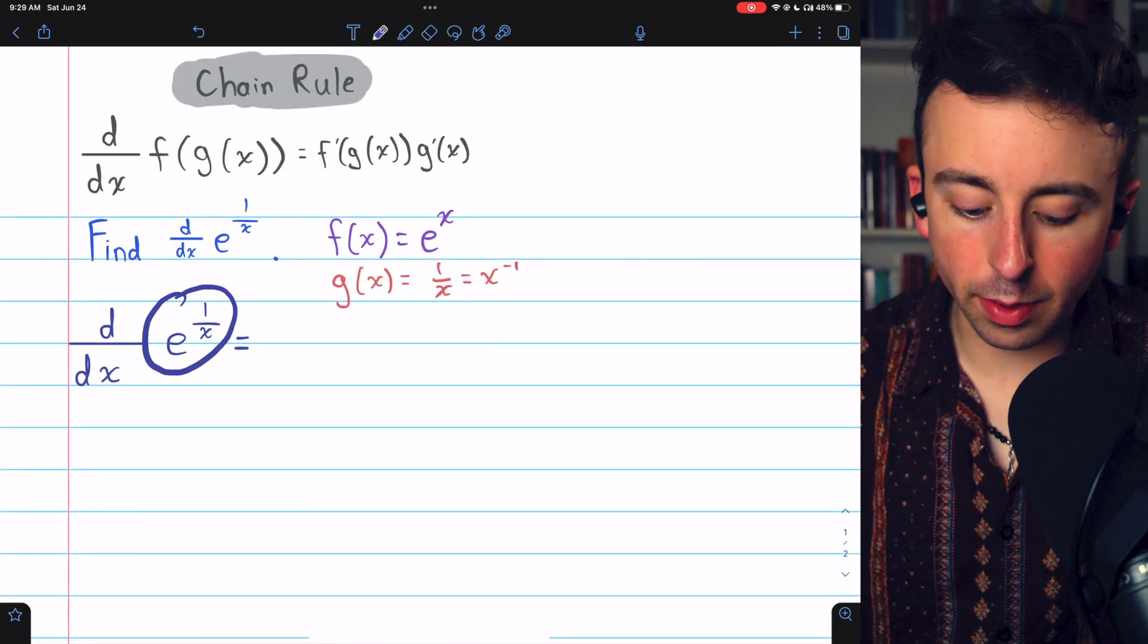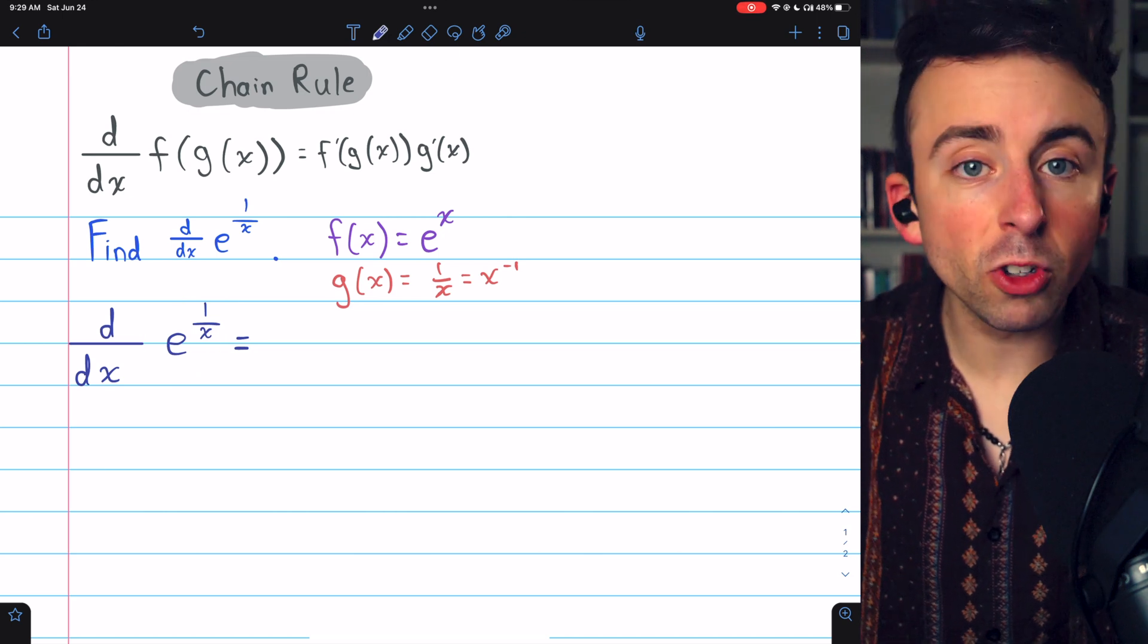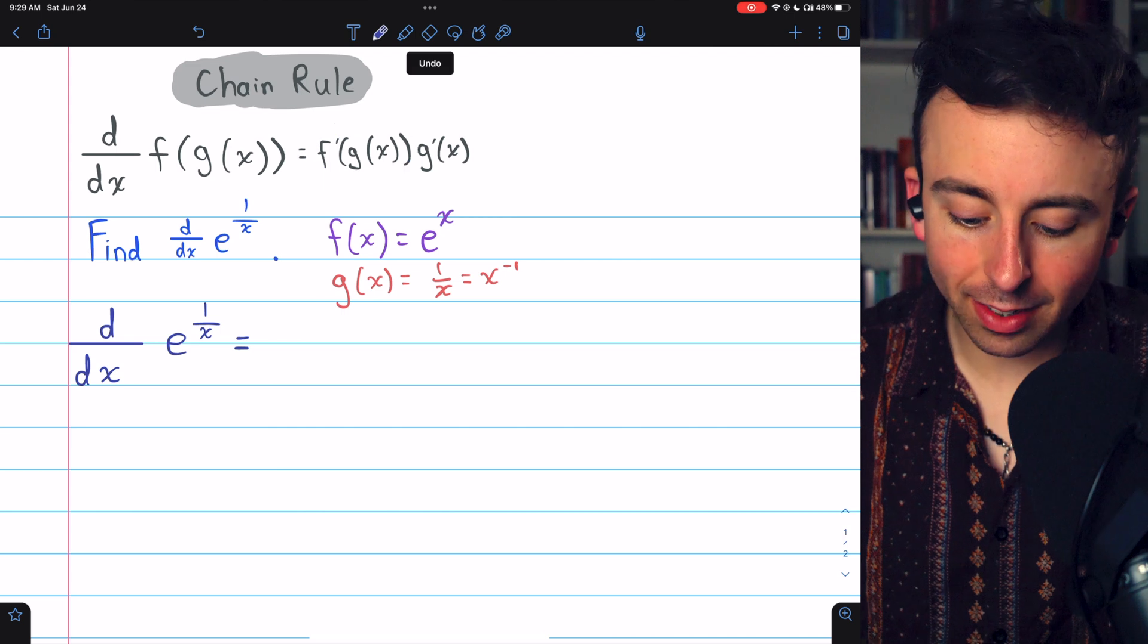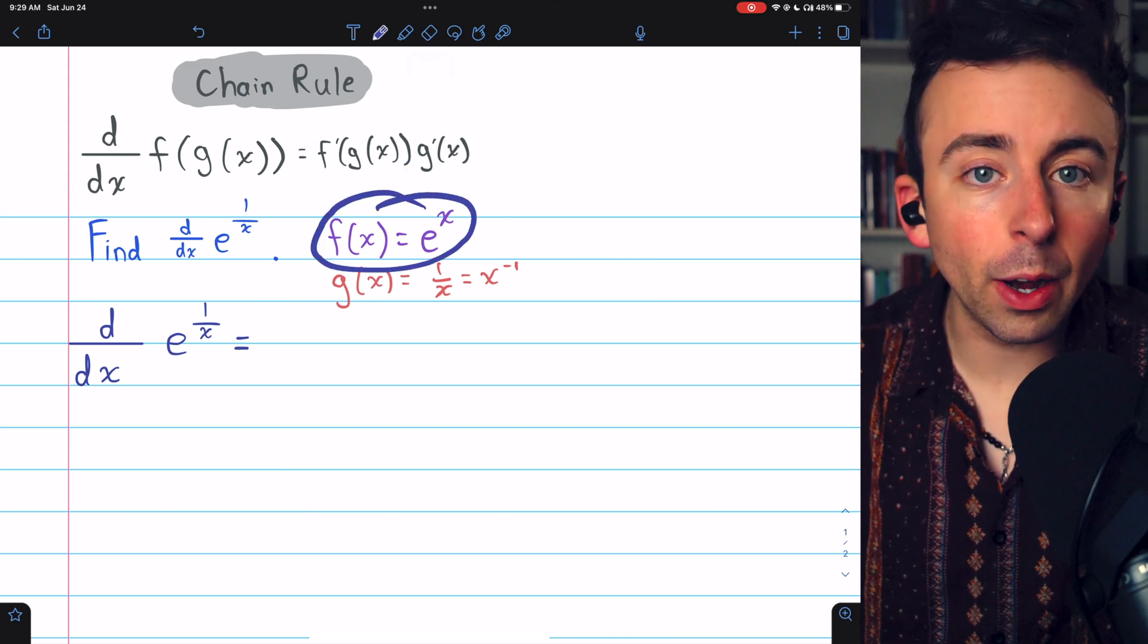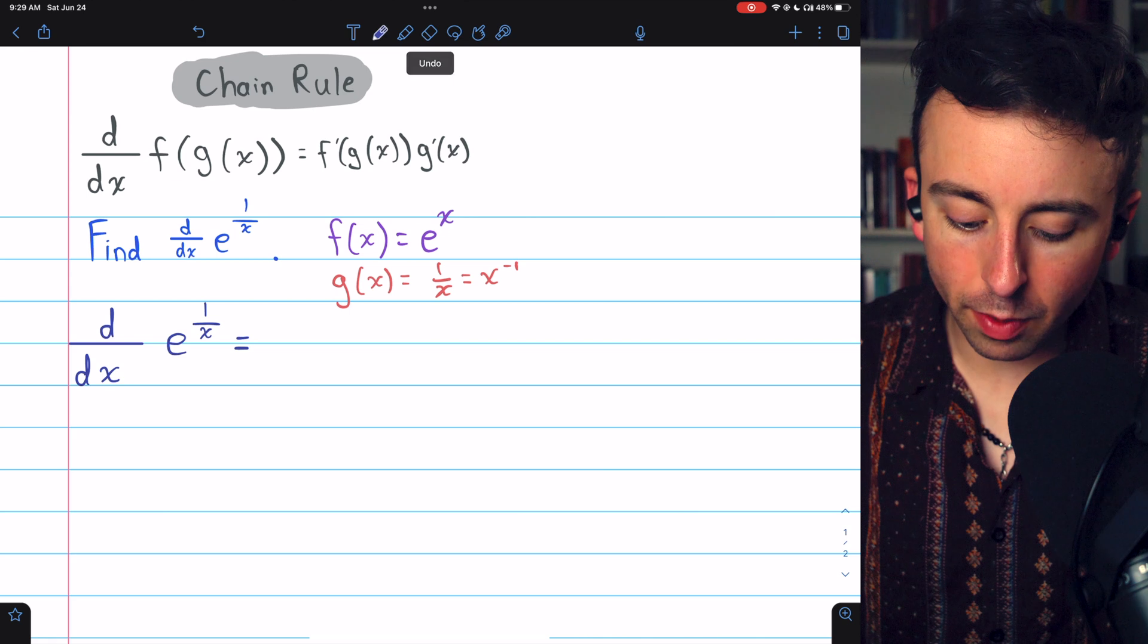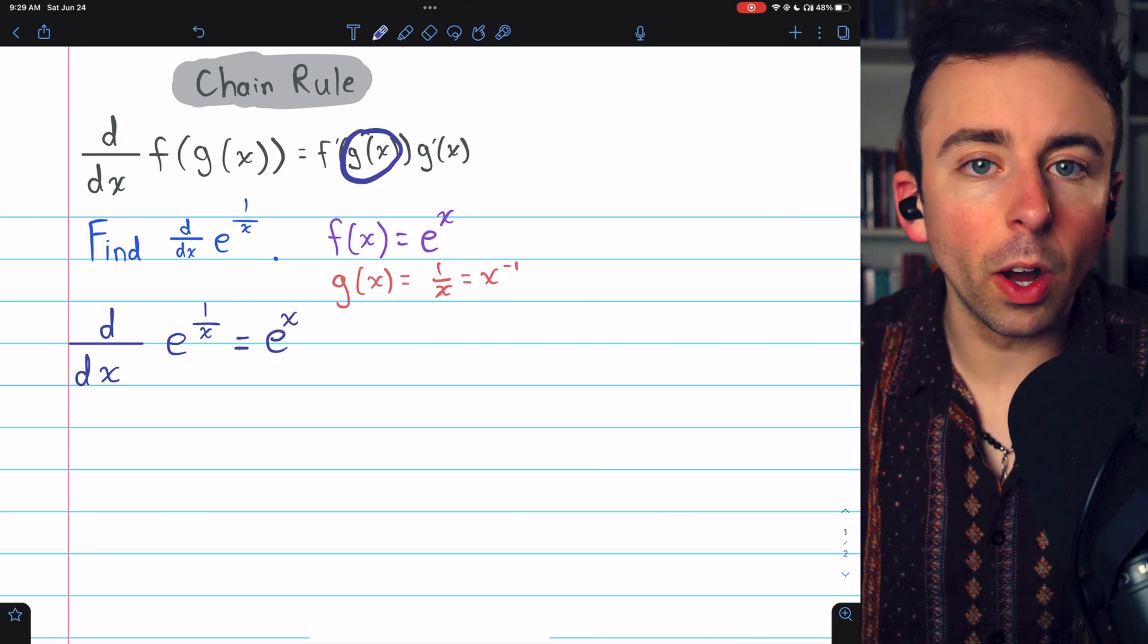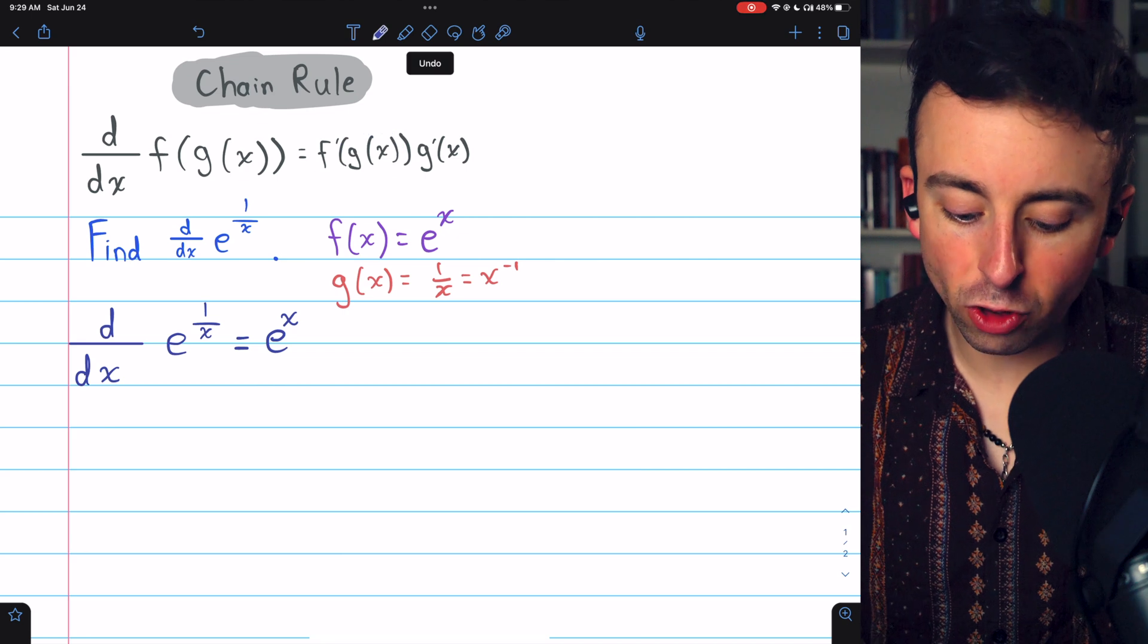And now we can take the derivative of e to the 1 over x using the chain rule. We begin with f prime of g of x. So f prime is the derivative of the outside function. The derivative of e to the x is just e to the x. But it's not x that we want inside the function. It's g of x.